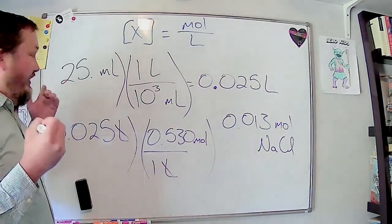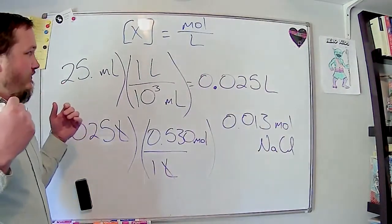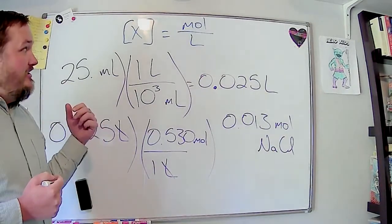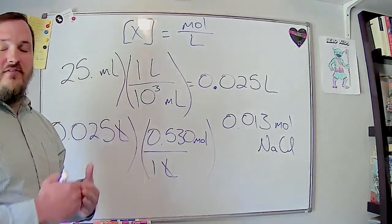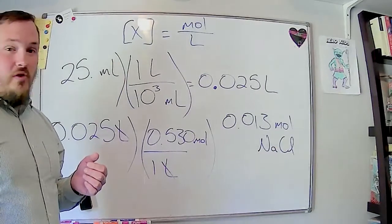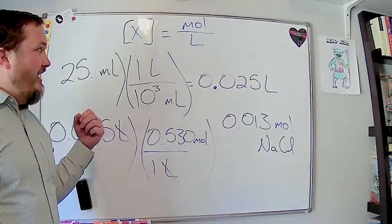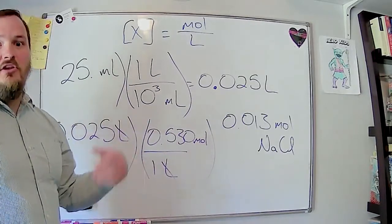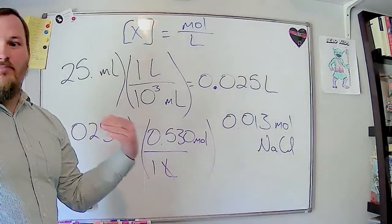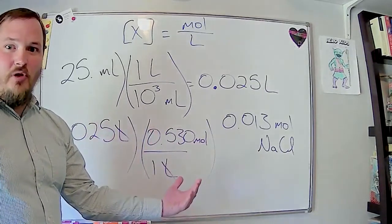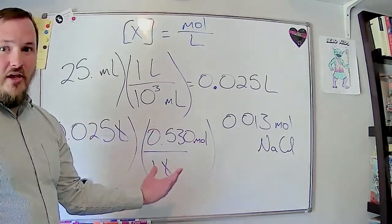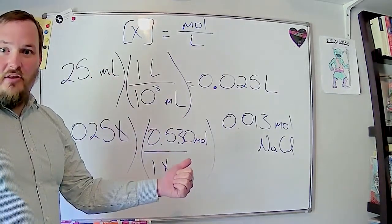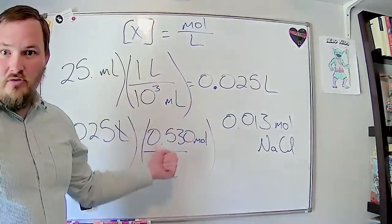A huge chunk of what you're supposed to take out of this class is being able to get to moles and then use that to figure out how much product you could make. We're going to go through a lot of different ways of getting from numbers you can actually measure to how many moles you have — because we can never directly measure moles, since atoms are too small and moles are too big. We can use mass and molecular weight, or use a concentration to get to moles.